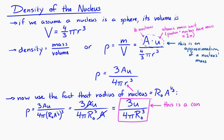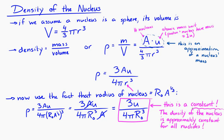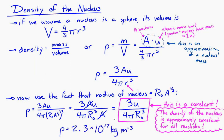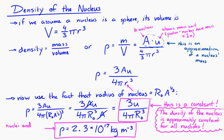That is a constant — the density of the nucleus is approximately constant, no matter how many nucleons are inside. The value works out to 2.3 × 10¹⁷ kilograms per cubic meter. That is an enormous density, not something we would encounter in everyday life. Nuclei are incredibly dense compared to our normal conception of matter.